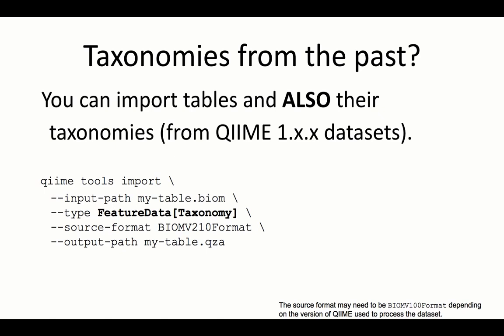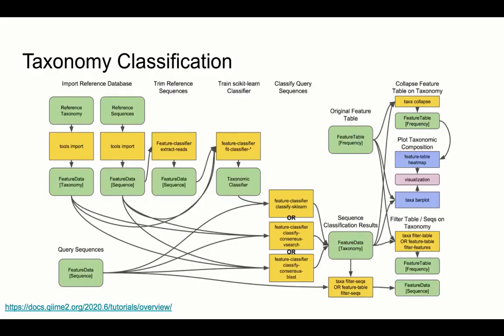If you have a taxonomy from the past — for instance in a biom file — you're able to import that into a FeatureData Taxonomy artifact and use it downstream in the same way as if it had been generated by the QIIME 2 feature classifier.